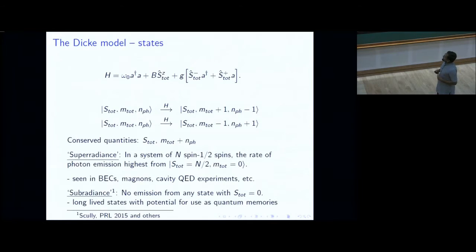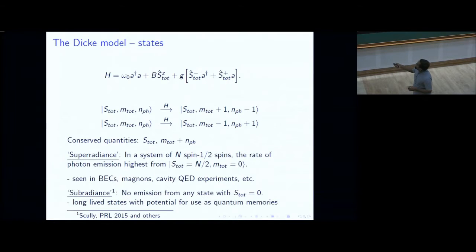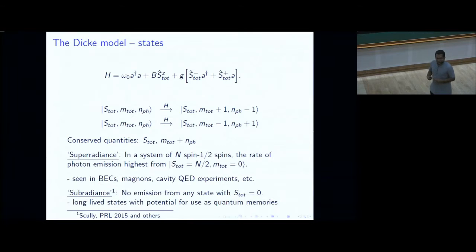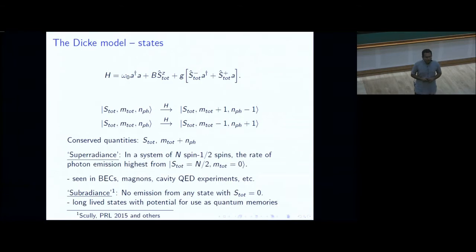The Hilbert space of the Dicke Hamiltonian can be characterized by quantum numbers S_total, M_total for the spin states, and the number of photons for the photon sector. When the Hamiltonian acts on a state, one term increases M while decreasing the photon number, and the other decreases M while increasing the photon number. This reveals conserved quantities: S_total is conserved, and M_total plus number of photons — roughly the number of excitations or the energy of the system — is also conserved.